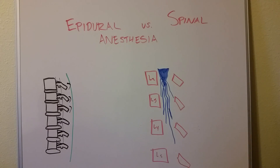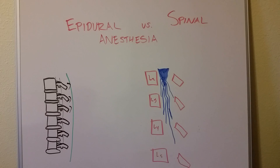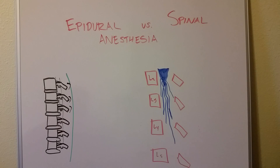Hey everybody, this video is going to be an introduction to the differences between epidural and spinal anesthesia. Spinal anesthesia can also be called intrathecal anesthesia, so if you've ever heard someone say they got an intrathecal, they're saying they got a spinal injection. These two types of anesthesia are very common. You hear about epidurals especially during childbirth, with many women choosing to have an epidural catheter placed to give them analgesia during that painful process.